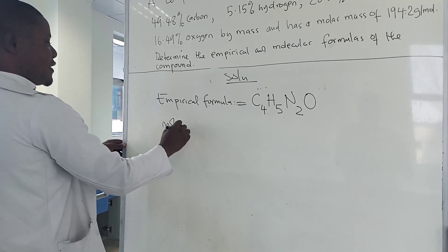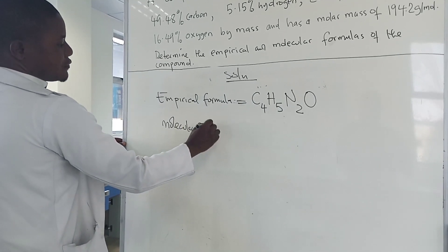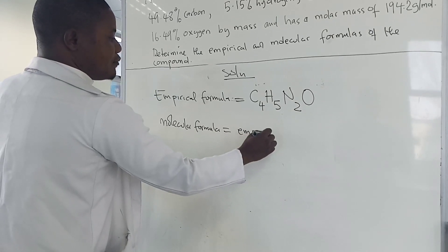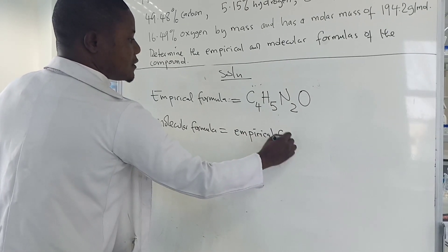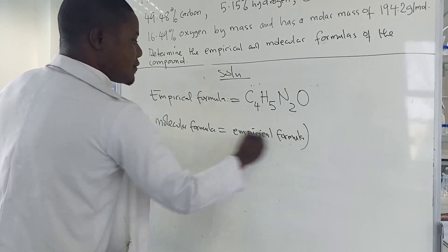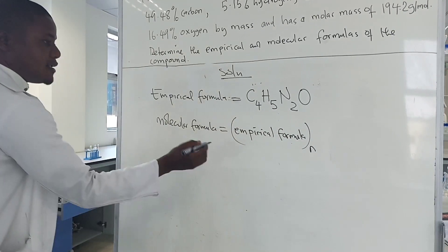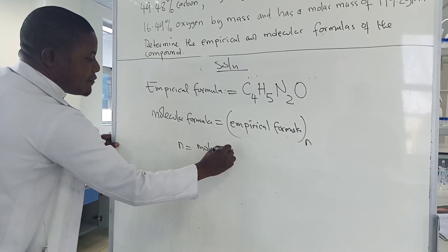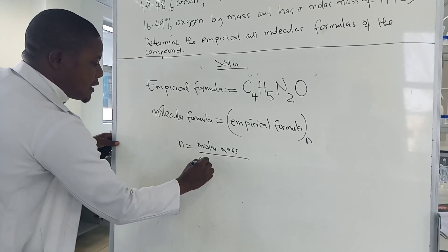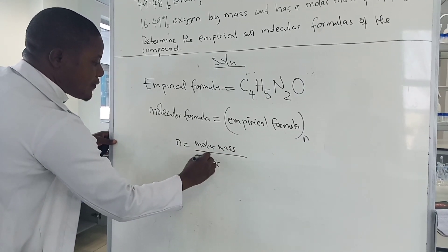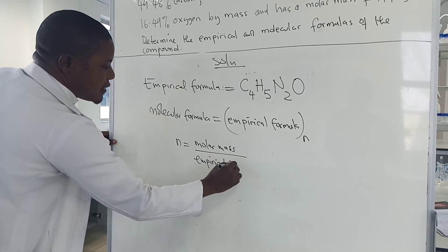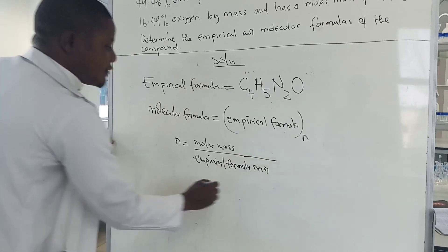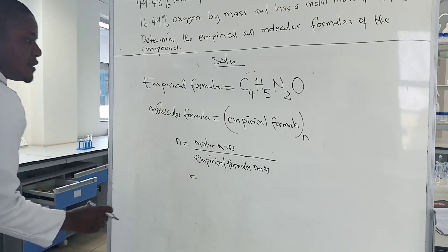The molecular formula is equal to the empirical formula times N, where N is an integer. N equals the molar mass divided by the empirical formula mass.